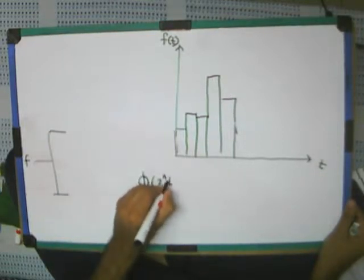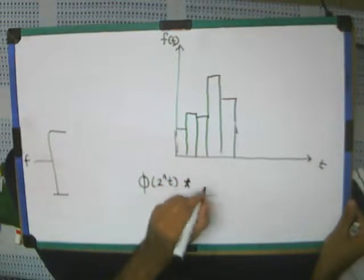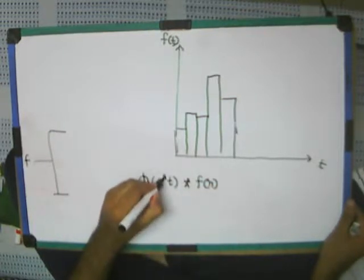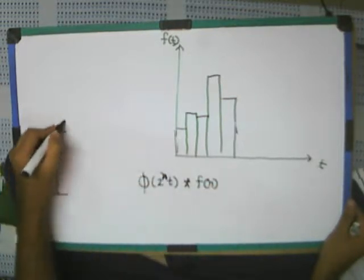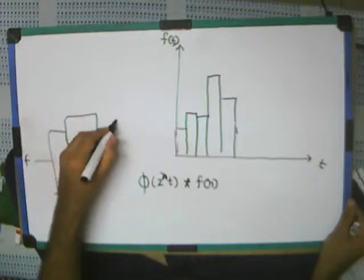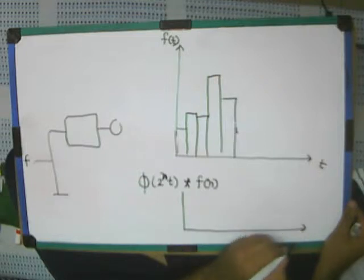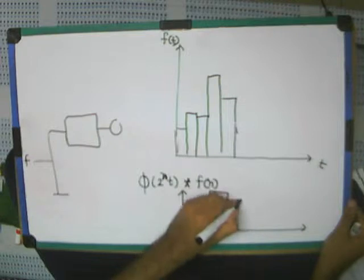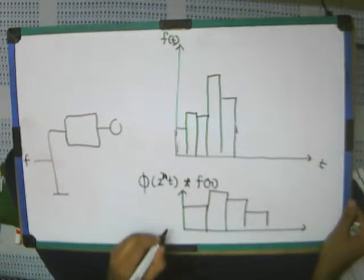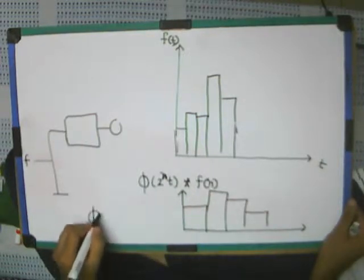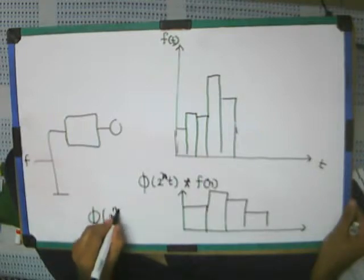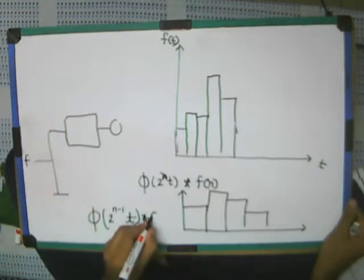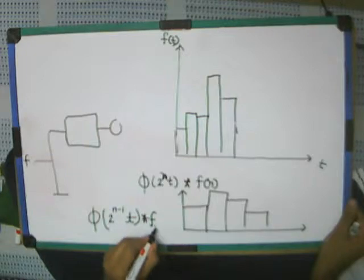So, 2 raise power NT, convolved with F of N, is how the signal is at the input side. When it is passed through the low pass filter and decimated, it looks something like this. So, here the signal becomes, now the resolution becomes 1 less. N minus 1.